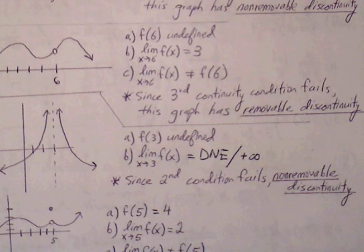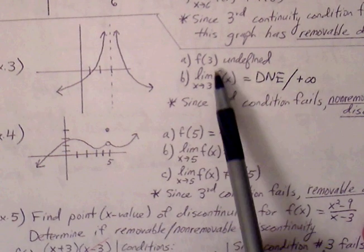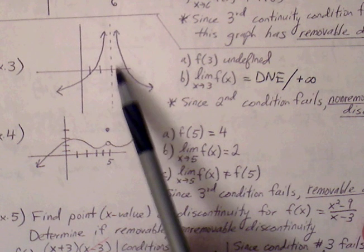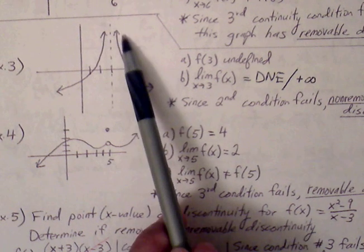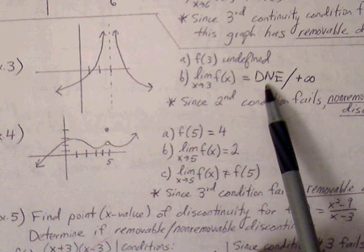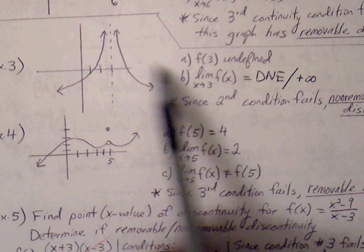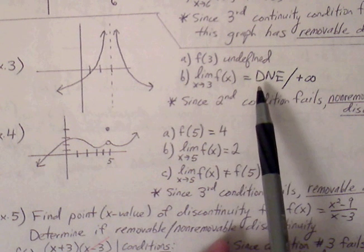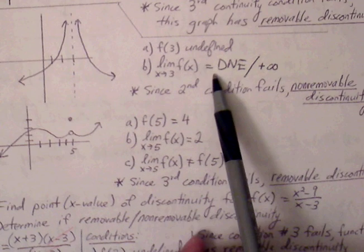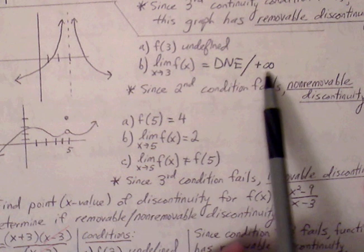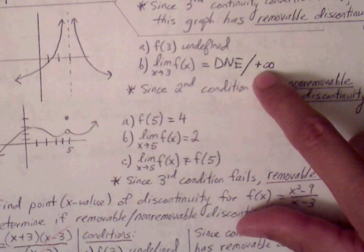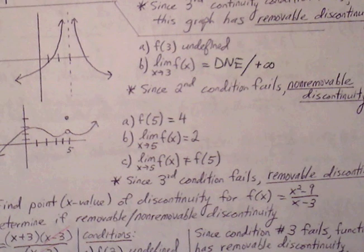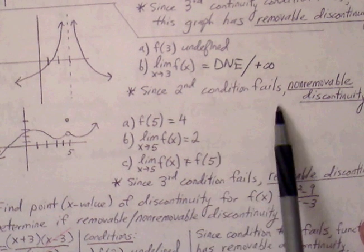Example 3: f of 3 is undefined because of a vertical asymptote. The limit as x approaches 3 — both sides approach positive infinity — but the limit does not exist because both sides must approach the same real number y value. Positive infinity is just the reason why the limit does not exist. Since the second condition fails, this is non-removable discontinuity.